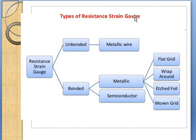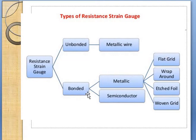Types of resistance strain gauges: they can be either unbonded or bonded. In unbonded gauges, only metallic wires are used. In bonded gauges, metallic or semiconductor types are used. Metallic bonded gauges can take various shapes — flat grids, wrap-around forms on a neutral carrier, etched foil (thin sheets), woven grid patterns, or wire wound in some pattern.